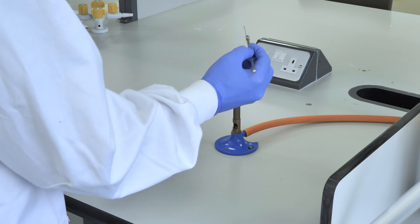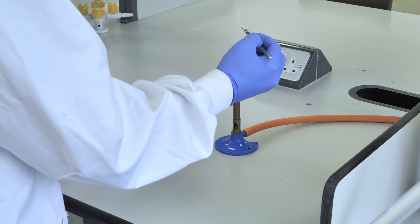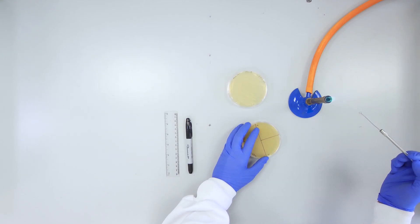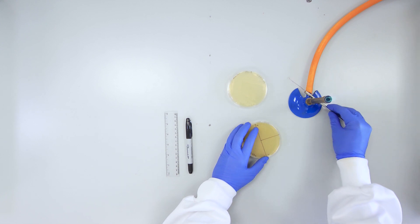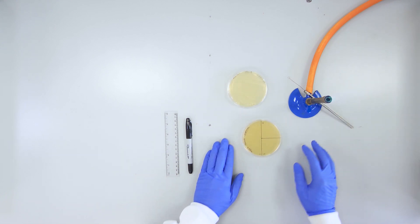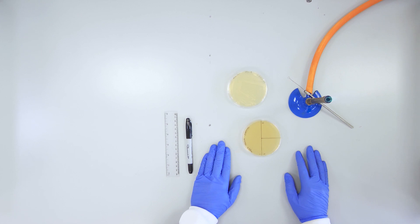Before you put your loop back down on the bench, make sure you re-sterilize it by placing it into the flame. It can now be left down and you can be confident that there is no bacteria remaining.